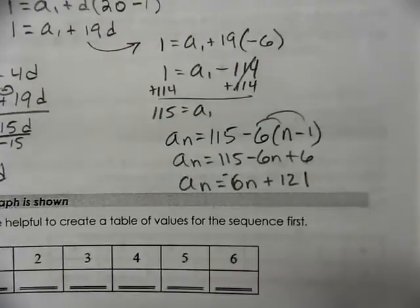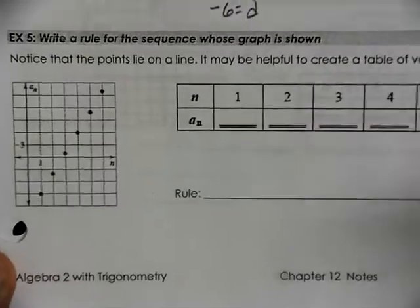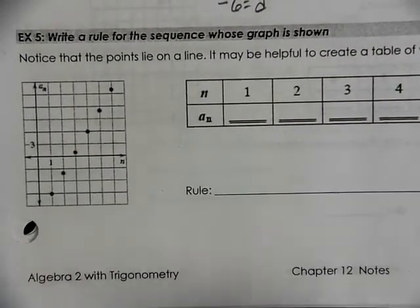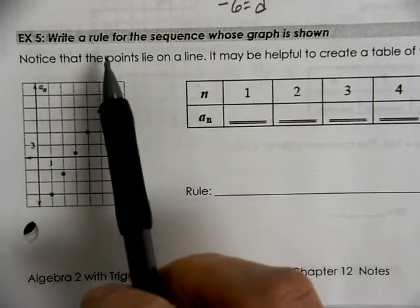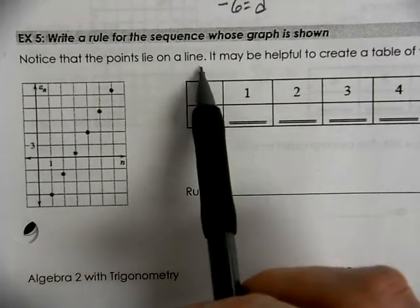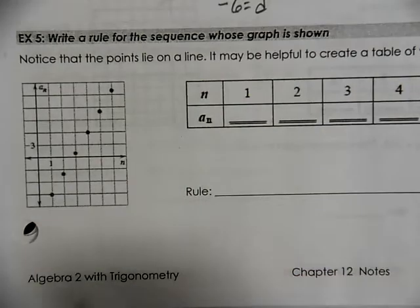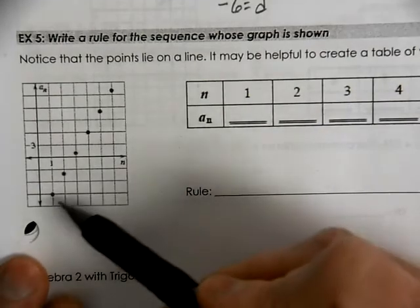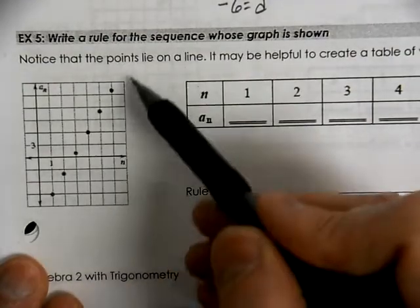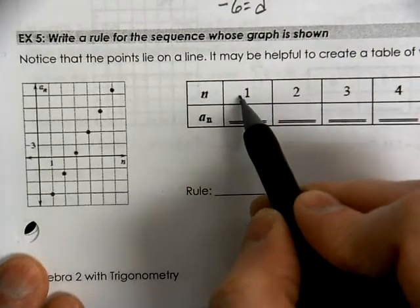For our final example, we're going to write a rule for the sequence for the values that are graphed. Notice that the points lie on a line. It may be helpful to create a table for the values to represent the sequence. So we have this linear graph with a whole bunch of dots on it.